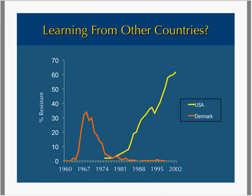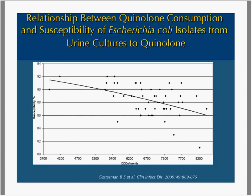Here is a natural experiment that occurred in Denmark in the 1960s and 70s, where they saw the emergence of MRSA. They put in place very aggressive antimicrobial stewardship, whereas in the United States we did not, and we saw an increasing prevalence of MRSA. Another example shows on the y-axis the percent susceptibility and on the x-axis DDDs per month — as you give more drug, you see susceptibility going down.